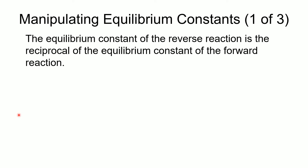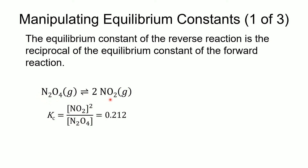Now we want to see what happens to K when we change things about our equation. We'll start with what happens when we change the direction of the reaction. Here we've got the equation we looked at earlier: N2O4 in equilibrium with NO2, and that ratio comes out to 0.212, so our equilibrium constant is 0.212.